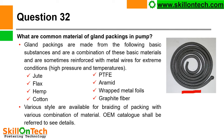So what are the common materials? Jute, flax, hemp, cotton, PTFE (polytetrafluoroethylene), aramid, wrapped metal foils, graphite fibers. Various styles are available for braiding of packing with various combinations of materials. You can refer to a catalog of manufacturers for different kinds of styles and their different braiding combinations.